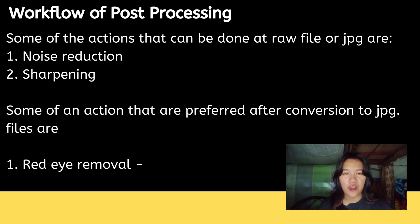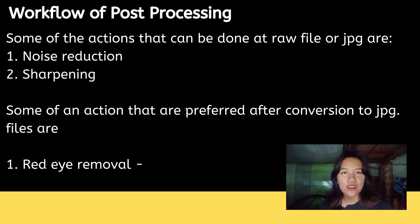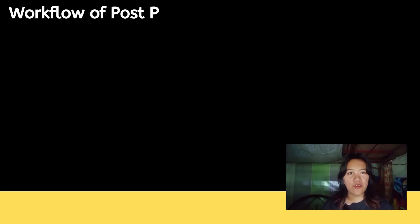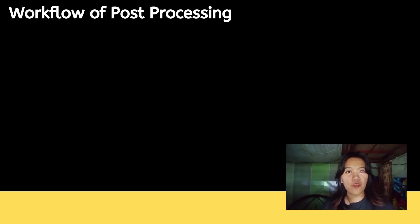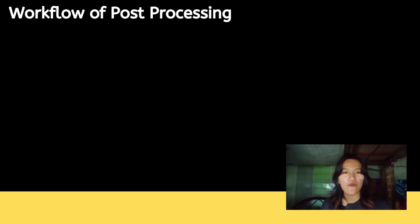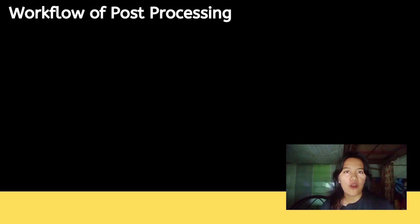Actions preferred after conversion to JPEG include: red eye removal, which corrects the appearance of red pupils in color photographs caused by a flash close to the camera lens in low light; local touch-up and cloning to erase unwanted objects and improve the photo by removing unwanted elements; adding a frame, which outlines or surrounds the image; and mixing with other JPEG files to change the background.